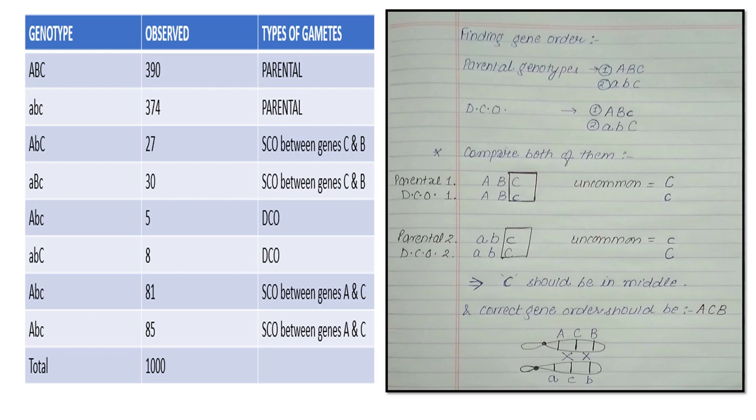Very simple. Two marks sometimes comes in section B. In section C also it comes combined - gene order gene distance. So it's very easy.